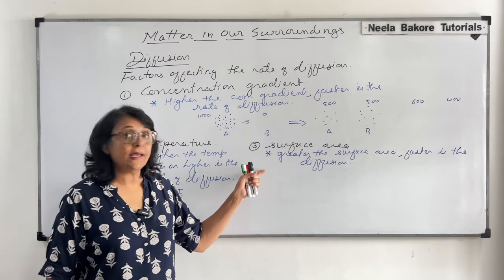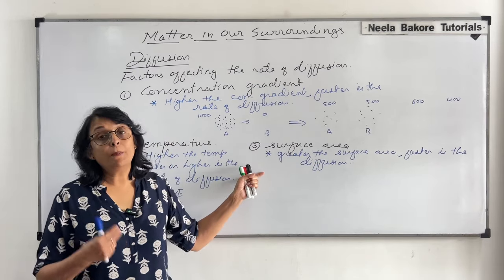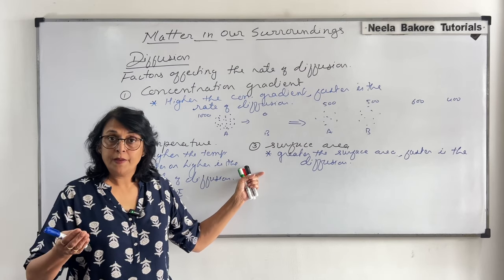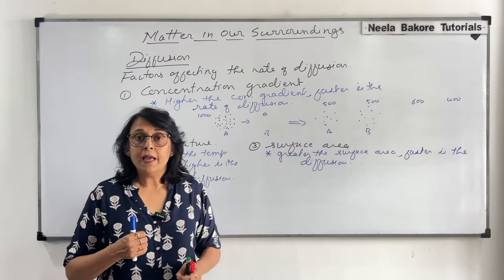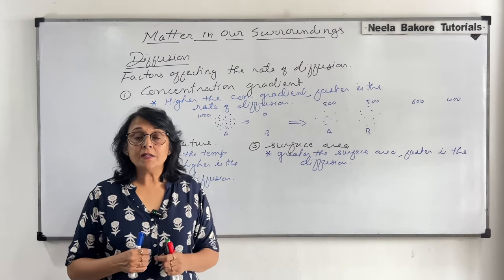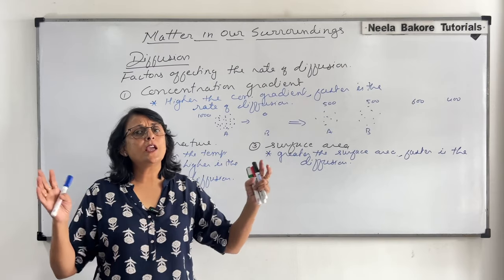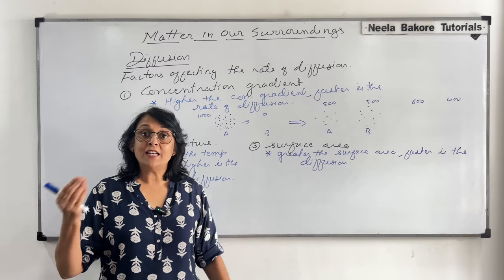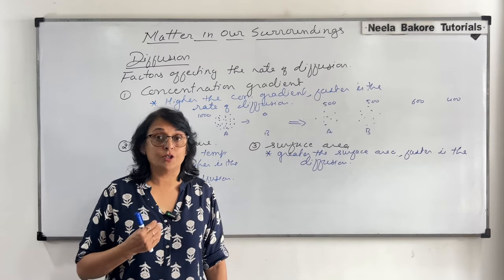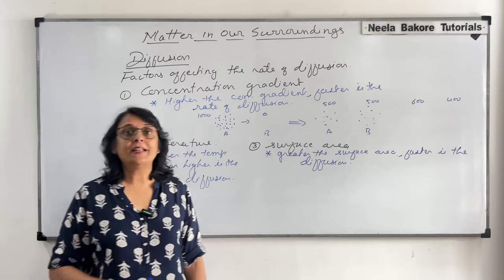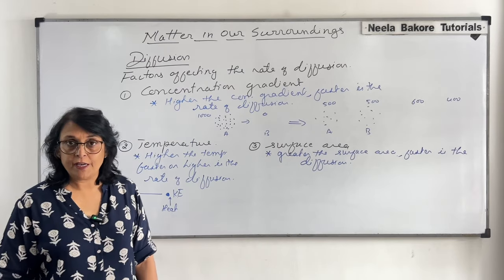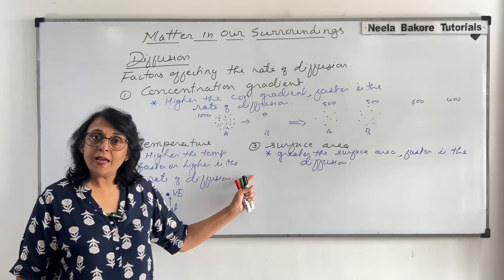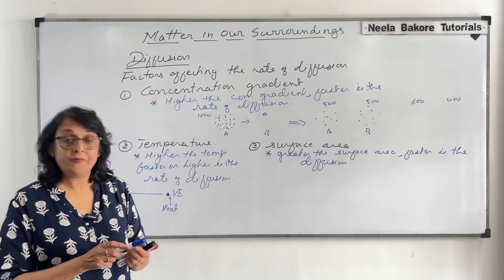These things help us later on. Like when we breathe in, in our lungs the surface area is very large, and that is why we are able to take in oxygen so efficiently. More surface area means faster diffusion.